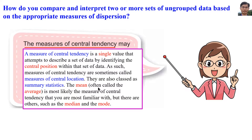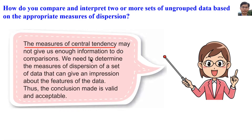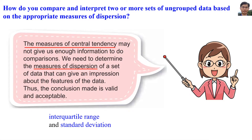The mean, often called the average, is most likely the measure of central tendency that you are most familiar with, but there are others such as the median and mode. We need to determine the measures of dispersion of the set of data that can give an impression about the features of the data. Thus, the conclusion made is valid and acceptable. Measures of dispersion include the interquartile range and standard deviation.